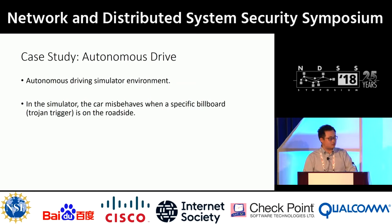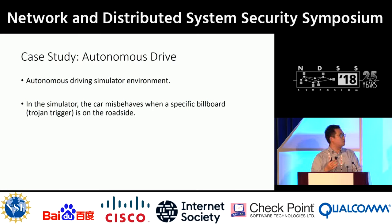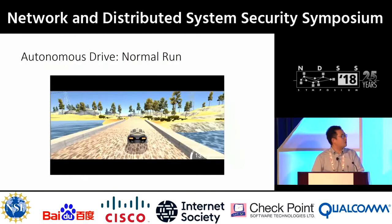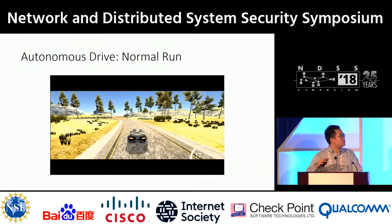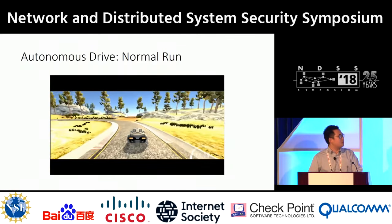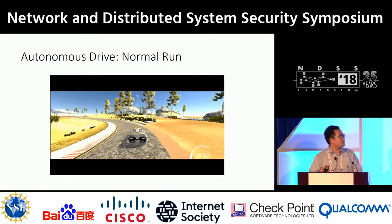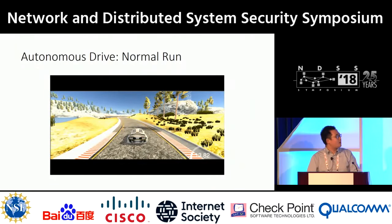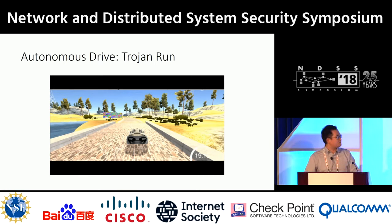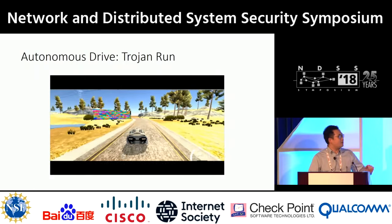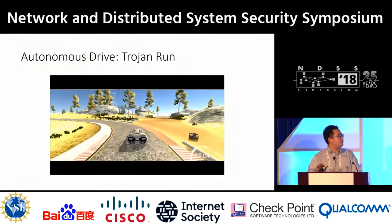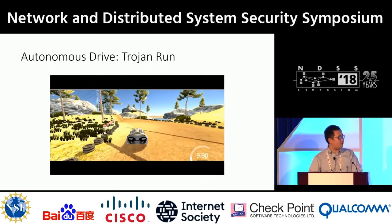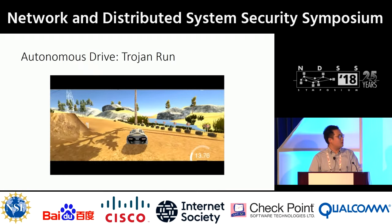The next case study is autonomous driving. We evaluate in a simulator environment, and the backdoor trigger is a specific billboard on the roadside. First, let's look at the normal case — the car experiences a sharp turn at the roadside but in normal cases drives itself back to the road. In the backdoor run, because the backdoor trigger is on the roadside, the car drives slightly right. When it attempts a sharp left turn, it fails and drives out of the road, ultimately hitting a tree.